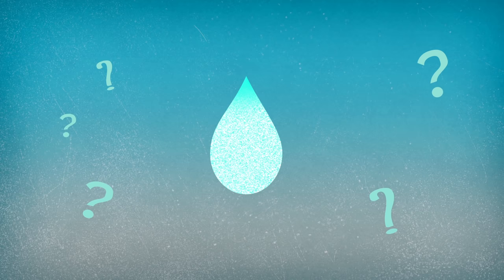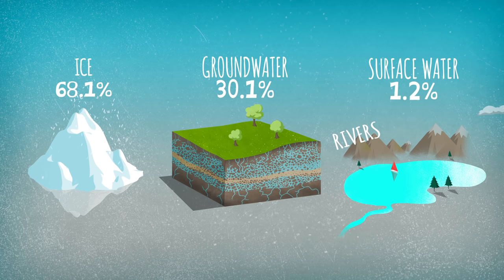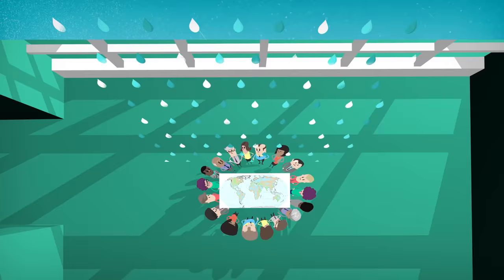So where is this water and how much is there of it? About 70% is in the form of ice, 30% is groundwater, and lastly only 1.2% is surface water: namely rivers, lakes, ground moisture, permafrost, and water present in the atmosphere.